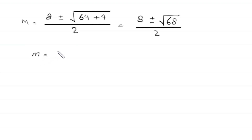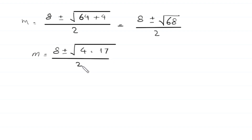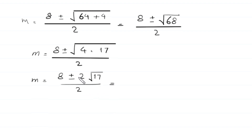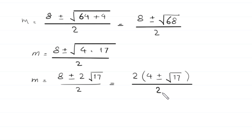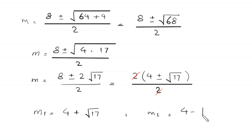Next, m is equal to 8 plus or minus square root of 68, and 68 can be written as 4 times 17, divided by 2. So m is equal to 8 plus or minus square root of 4 — which is 2 — times square root of 17, divided by 2. We can factor out 2 as a common factor, giving 2 times the quantity 4 plus or minus square root of 17, divided by 2. The 2s cancel, and we get two values: m₁ equals 4 plus square root of 17, and m₂ equals 4 minus square root of 17.